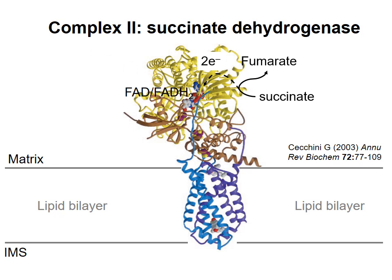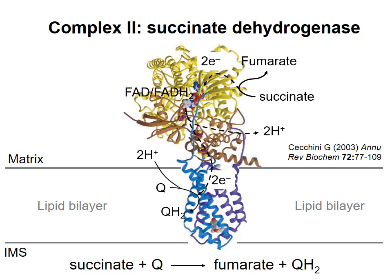Now some textbooks or websites will show FADH2 as a product at this step of the citric acid cycle, and not QH2. That's true in that FADH2 is produced, but keep in mind that the electrons of FADH2 are immediately lost to iron sulfur centers in complex II, and are ultimately passed to coenzyme Q to make QH2. So FADH2 is only transiently produced, while QH2 is a more long-lived product of the reaction. Note that no protons are moved across the membrane during this process, so the net reaction is ultimately just a transfer of electrons from succinate to coenzyme Q.